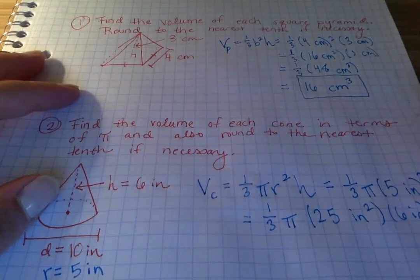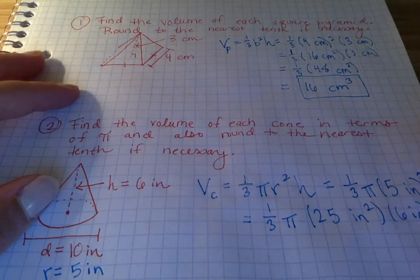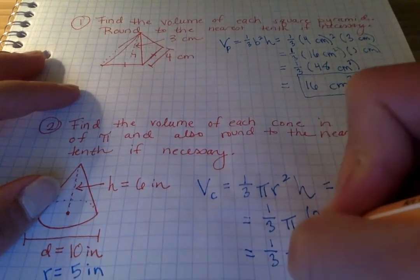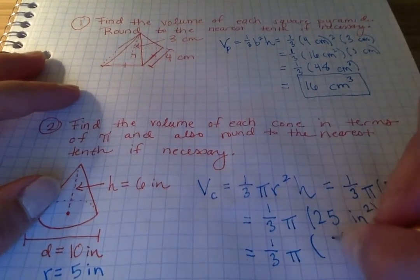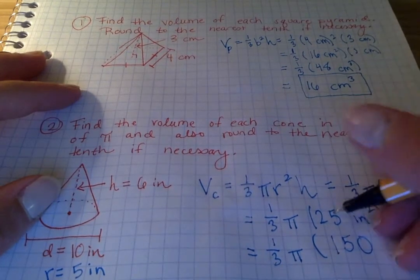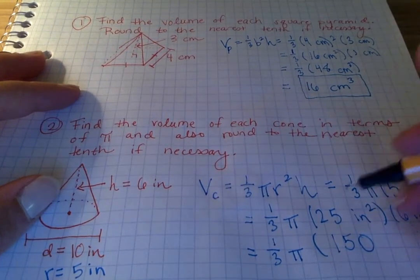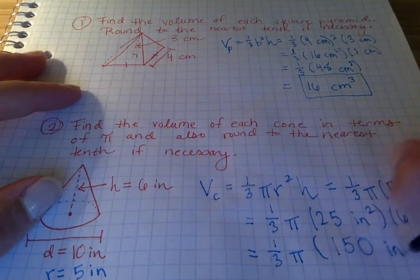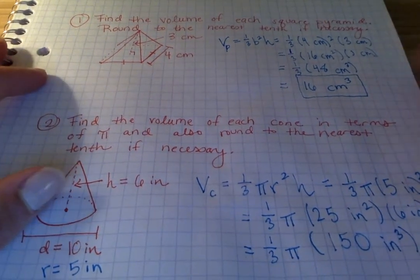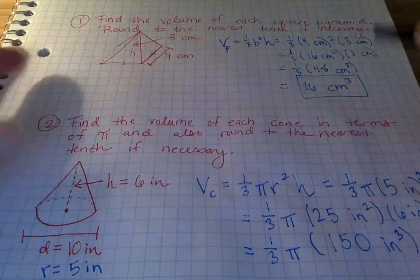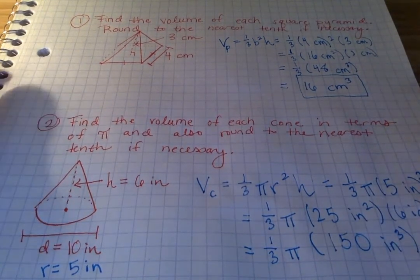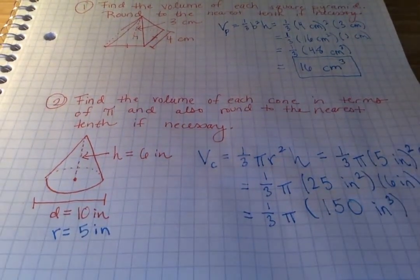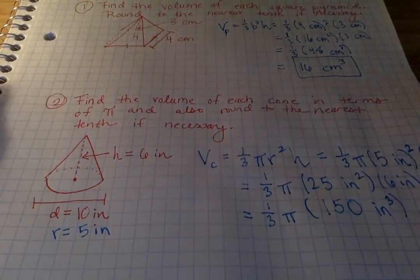Now I have twenty-five times six, which is one-hundred and fifty, and you can do that in your head by saying twenty-five times four is a hundred plus twenty-five times two, which is fifty, so together it's a hundred and fifty inches cubed. Now I have a hundred and fifty divided by three. Well, I'm going to use my trick again. One plus five plus zero is six, and six is divisible by three. That means a hundred and fifty is divisible by three.